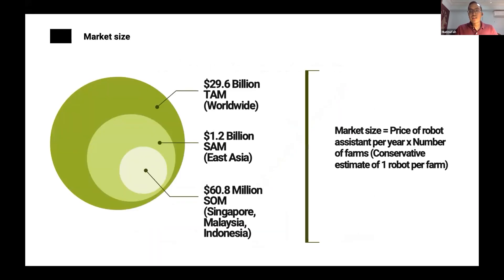Our market size is calculated by taking the selling price of our robot assistant per year, multiplied by the number of farms and a conservative estimate of one robot per farm. This amounts to $60.8 million for our addressable market, which consists of Singapore, Malaysia, and Indonesia.